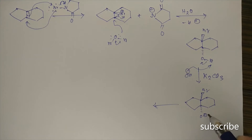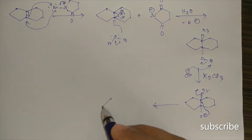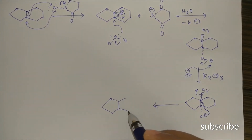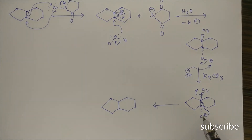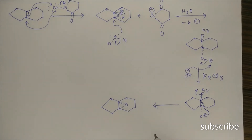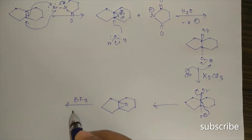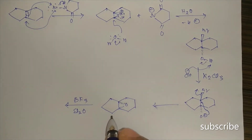The O⁻ will attack the carbon bearing the bromine, and Br will be eliminated, forming an epoxide ring. The epoxide ring is formed from below the plane.